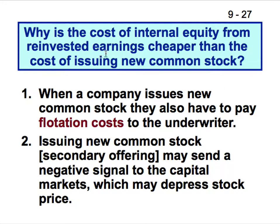Why is the cost of internal equity from reinvested earnings cheaper than the cost of issuing new common stock? When a company issues new common stock, they also have to pay flotation costs to the underwriter. Issuing new common stock — also called a secondary offering or seasoned equity offering (SEO) — can send a negative signal to capital markets which depresses the stock price. This is the dilution effect: the number of shares goes up but company value doesn't change overnight, so the existing price drops by 4–5% right away.